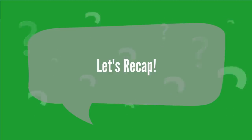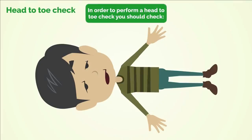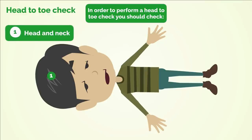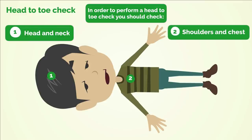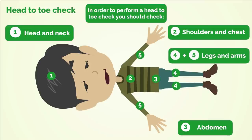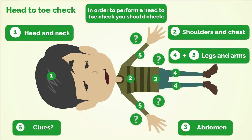Recap: in order to perform a head-to-toe check, you should check: number 1 — the casualty's head and neck area; number 2 — the casualty's shoulders and chest areas; number 3 — the casualty's abdomen area; numbers 4 and 5 — the casualty's legs and arms; number 6 — for clues such as medic alert bracelets, needle marks, medication, etc.